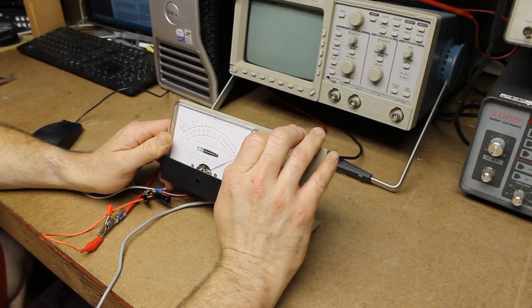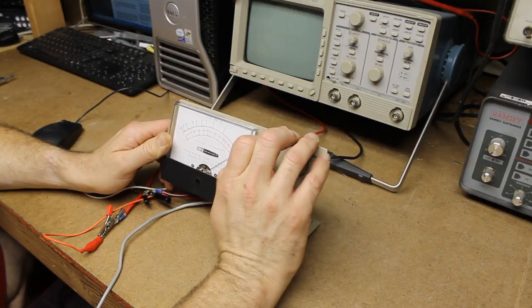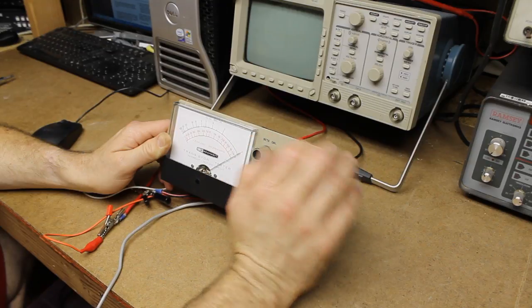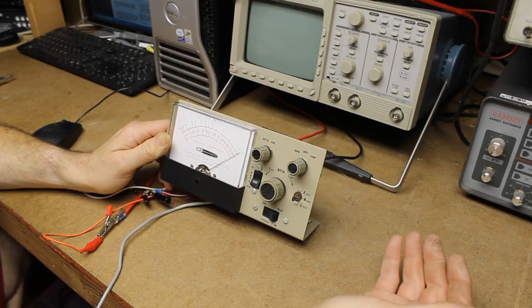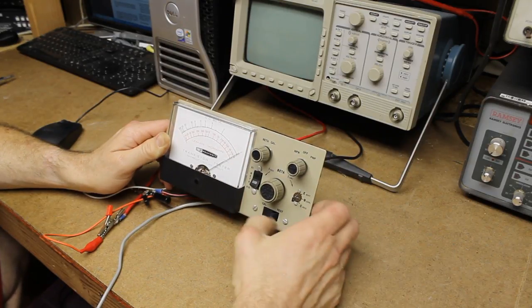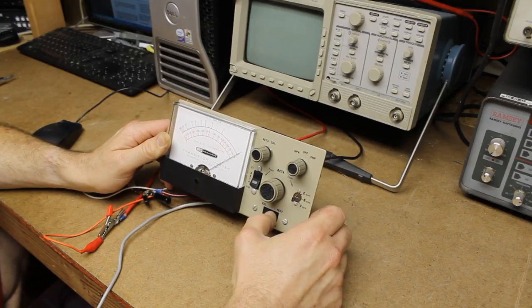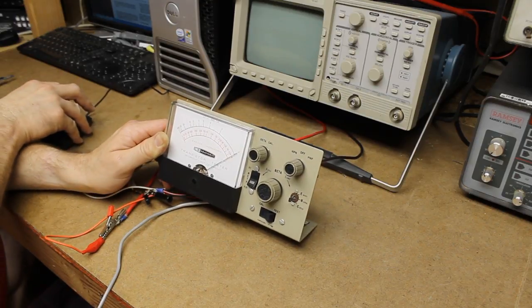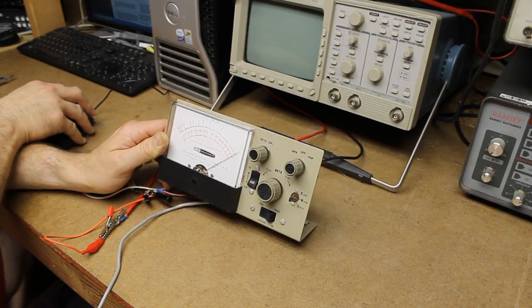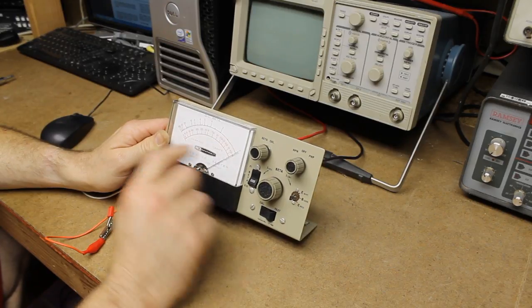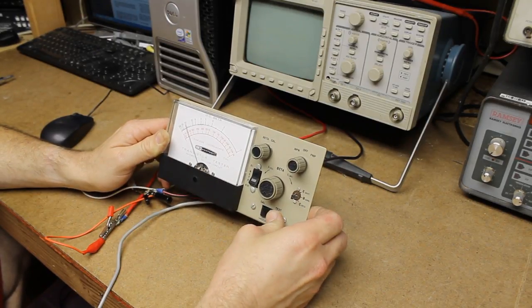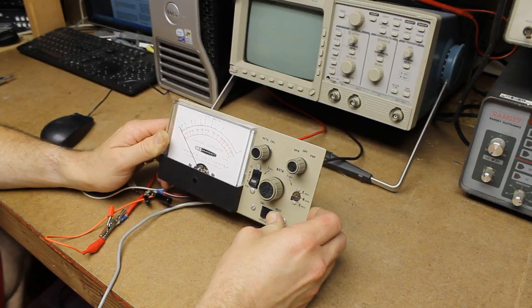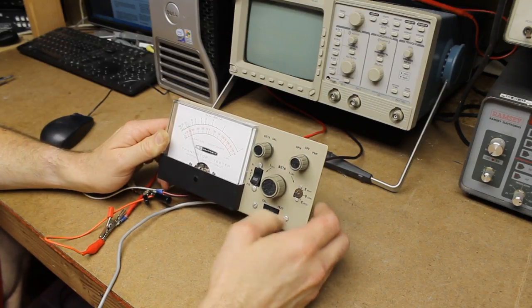And it's a little touchy. The needle swings pretty rapidly. Once we've done that, then we simply switch to test and the beta of the transistor, the gain, will be read out directly on the DC beta scale. This transistor is indicating around 75 for the beta.